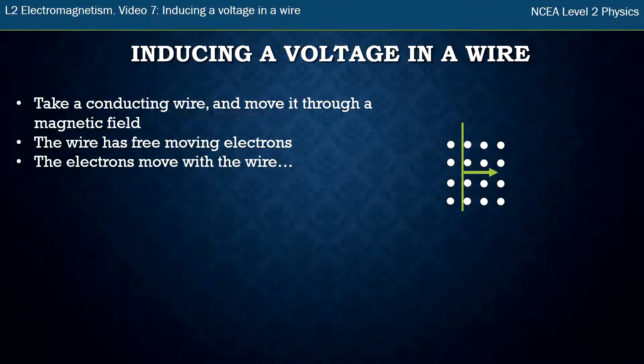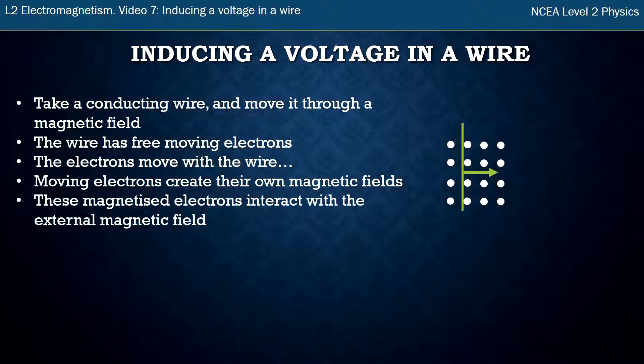Now the electrons are in the wire, and I'm moving the wire to the right. Therefore, all of my electrons are moving to the right. We know that moving electrons create their own magnetic fields. That's what this whole topic's been about. When they create their own magnetic field and become magnetized, they interact with the white dots that are already there, the external magnetic field.